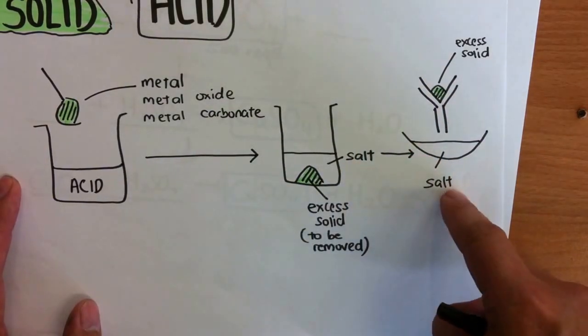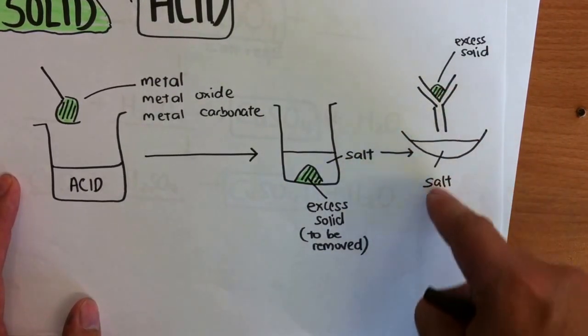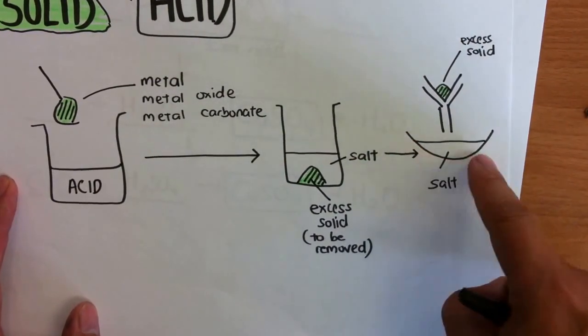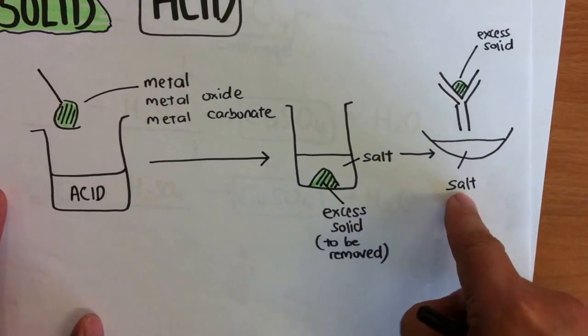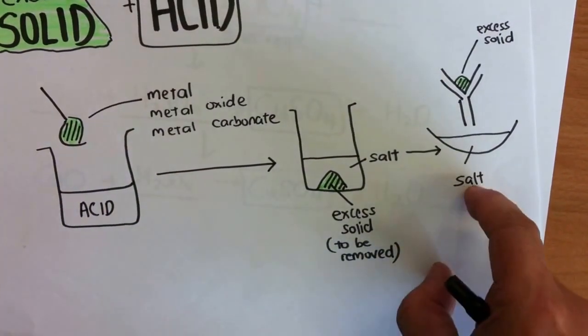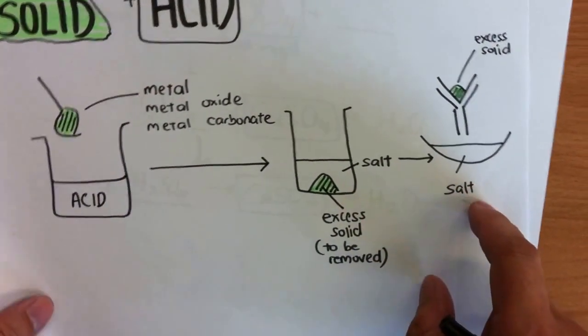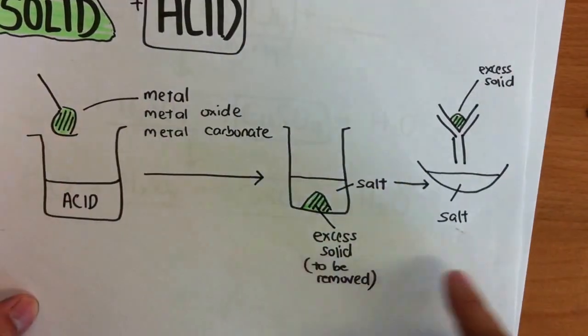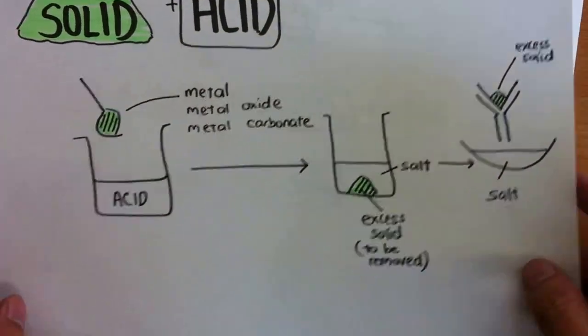This solid is then removed by the process of filtration. And what we want is the salt, the salt will flow through and it is collected in the evaporating dish known as the filtrate. Salt will be collected as filtrate, and then we can crystallize and get dry salts. So basically this is the overall process.